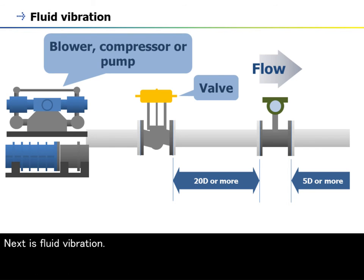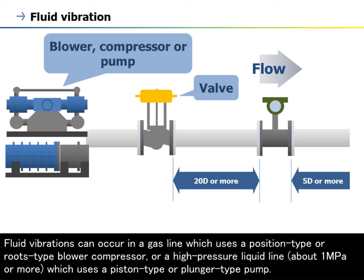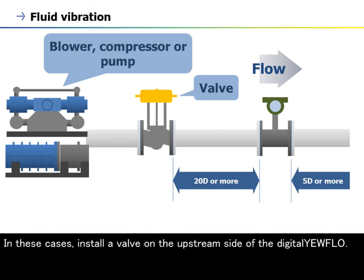Next is fluid vibration. Fluid vibrations can occur in a gas line which uses a position type or roots type blower compressor, or a high pressure liquid line, about 1 MPa or more, which uses a piston type or plunger type pump. In these cases, install a valve on the upstream side of the digital yearflow.